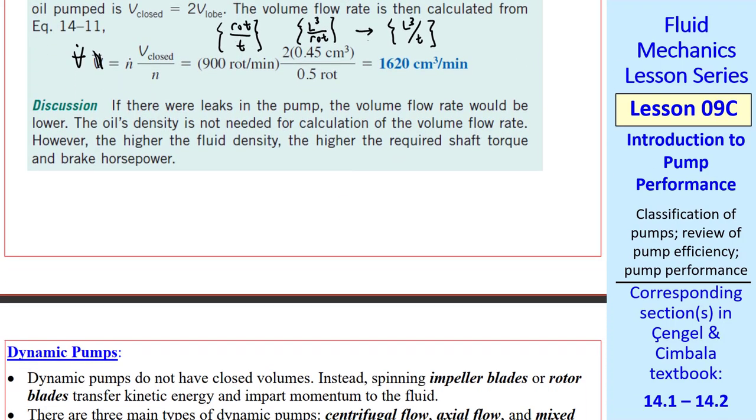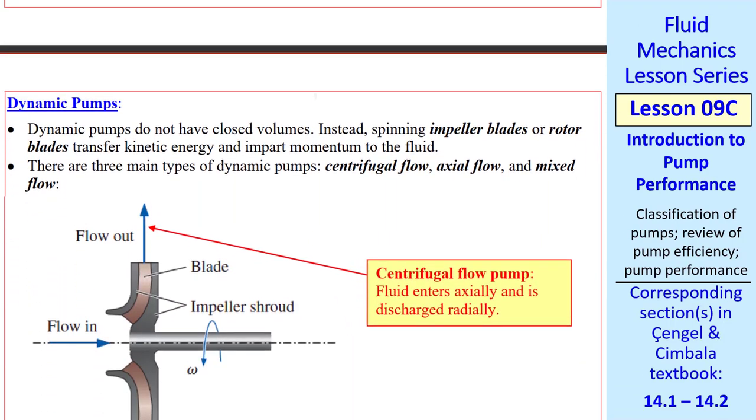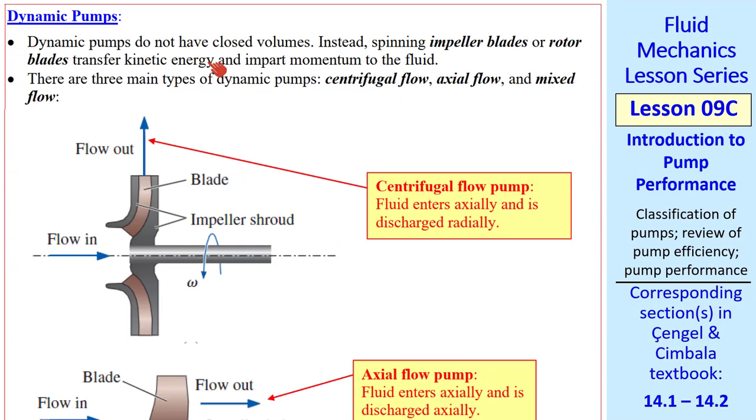The other main type of pump, or classification of pump, is dynamic pump. Dynamic pumps do not have closed volumes. Instead, they have a spinning impeller blade, or rotor blade, that transfers kinetic energy and momentum to the fluid. There's three main types of dynamic pumps, centrifugal, axial, and mixed flow. These are sketched here.